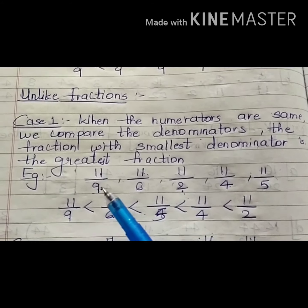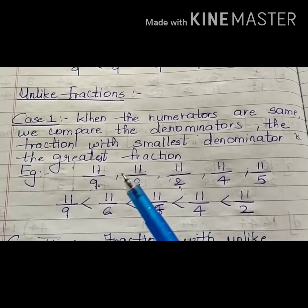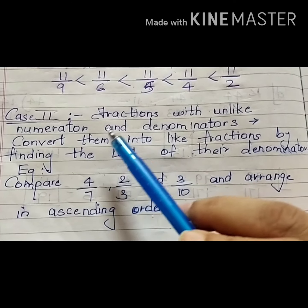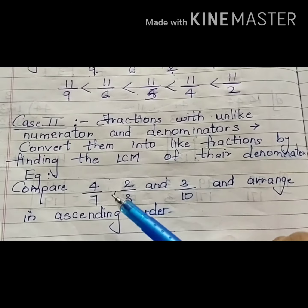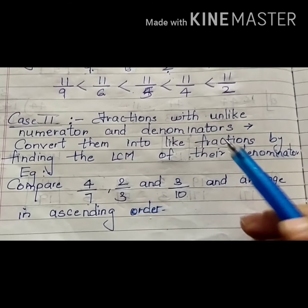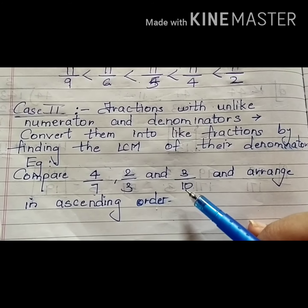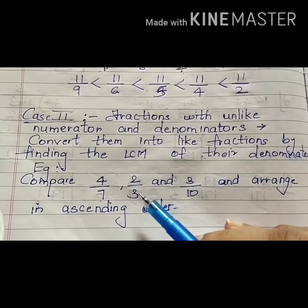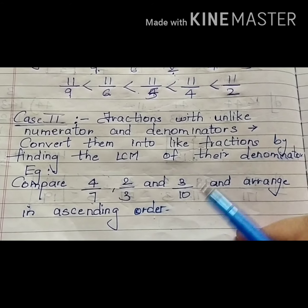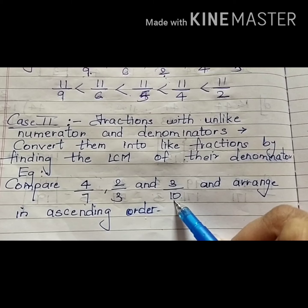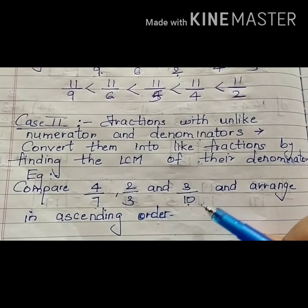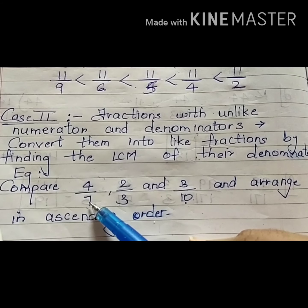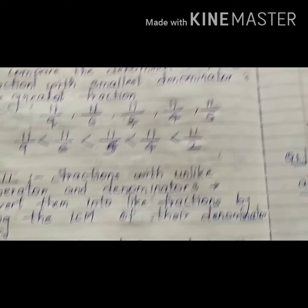This was the case when all numerators were equal. We cannot call it like fractions because like fractions only have the same denominators. Now case two: fractions with unlike numerators and unlike denominators. When both numerators and denominators are different, we need to make the denominators equal. To do that, I need a specific number — the LCM of 7, 3, and 10.